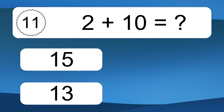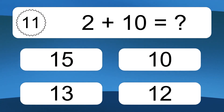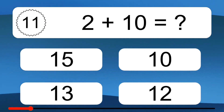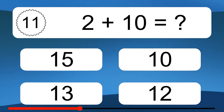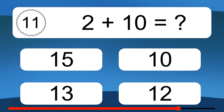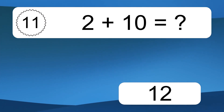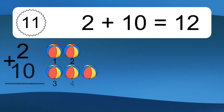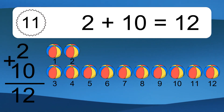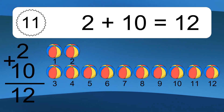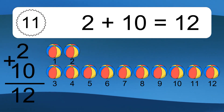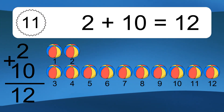2 plus 10 equals what? 2 plus 10 equals 12. Let's count it. 1, 2, 3, 4, 5, 6, 7, 8, 9, 10, 11, 12.